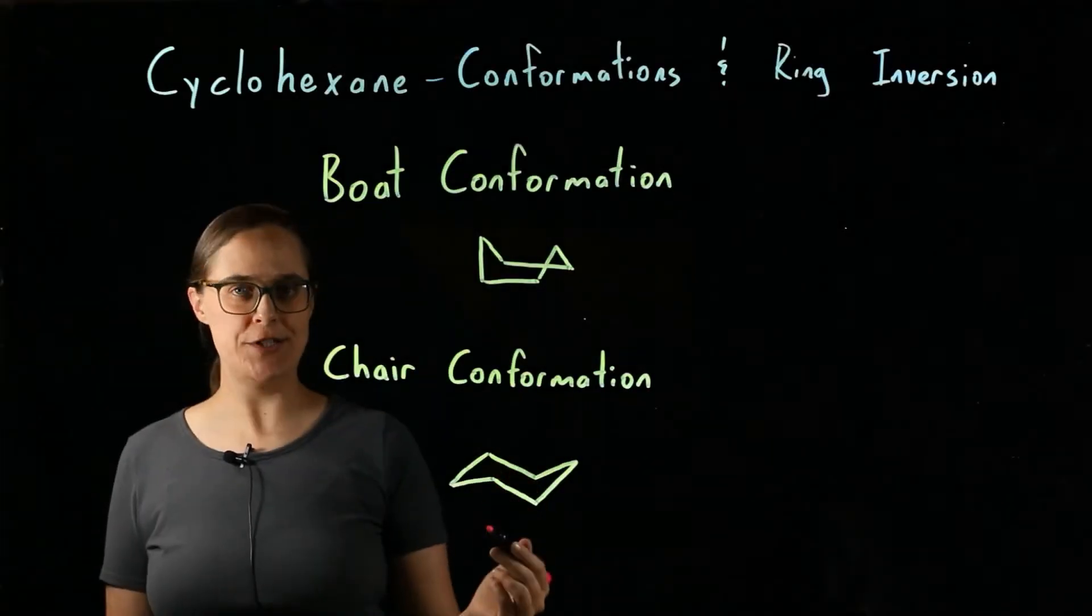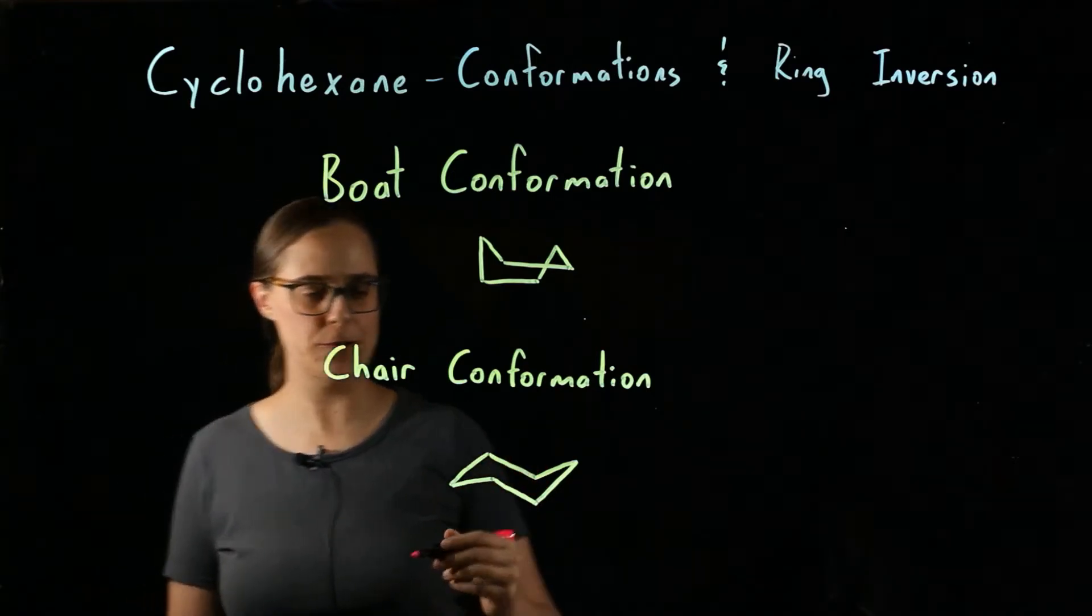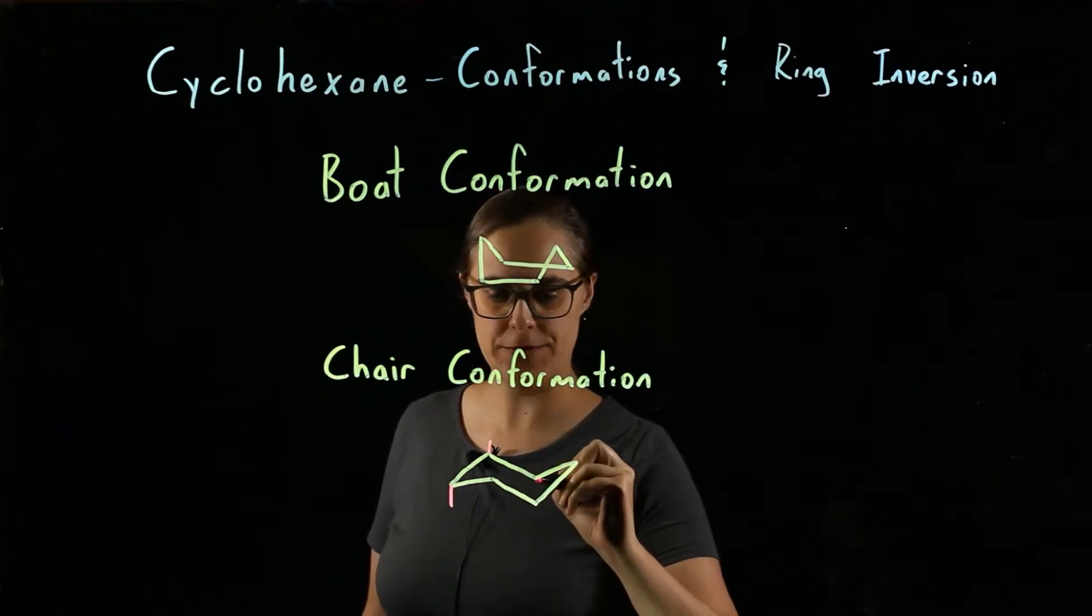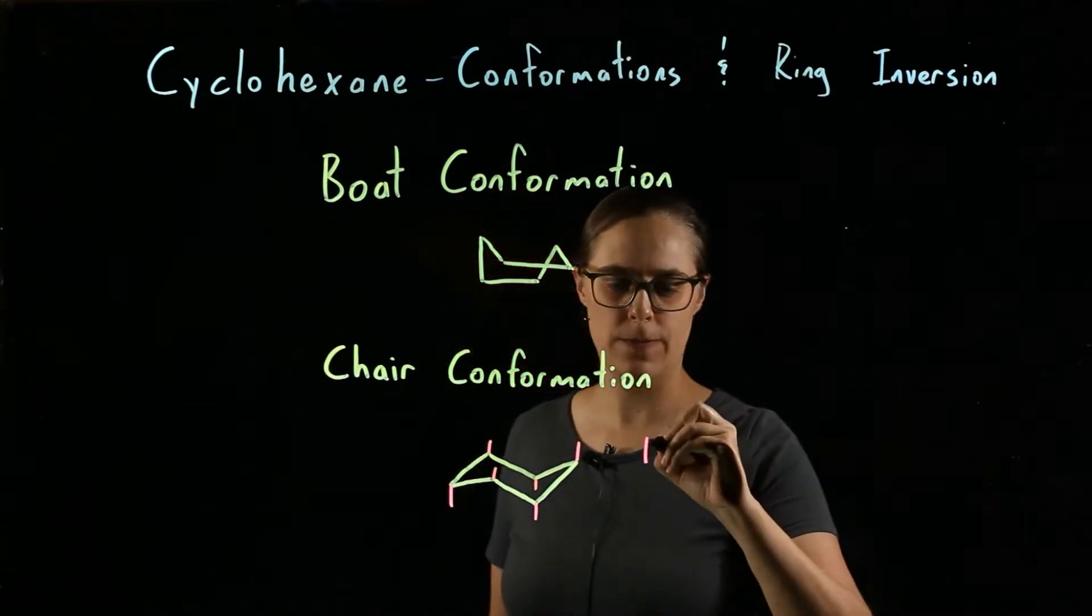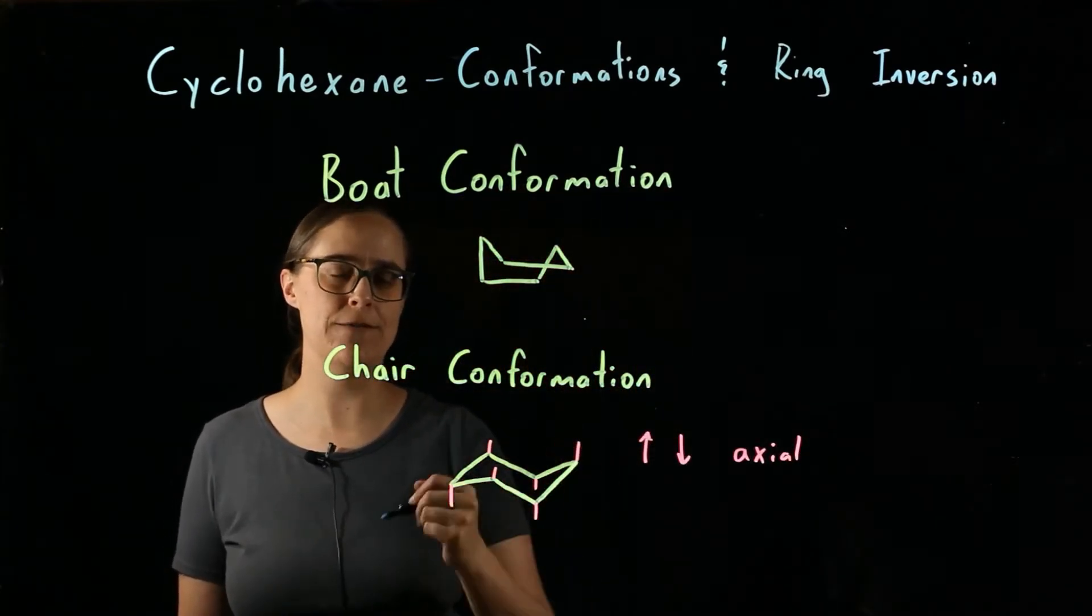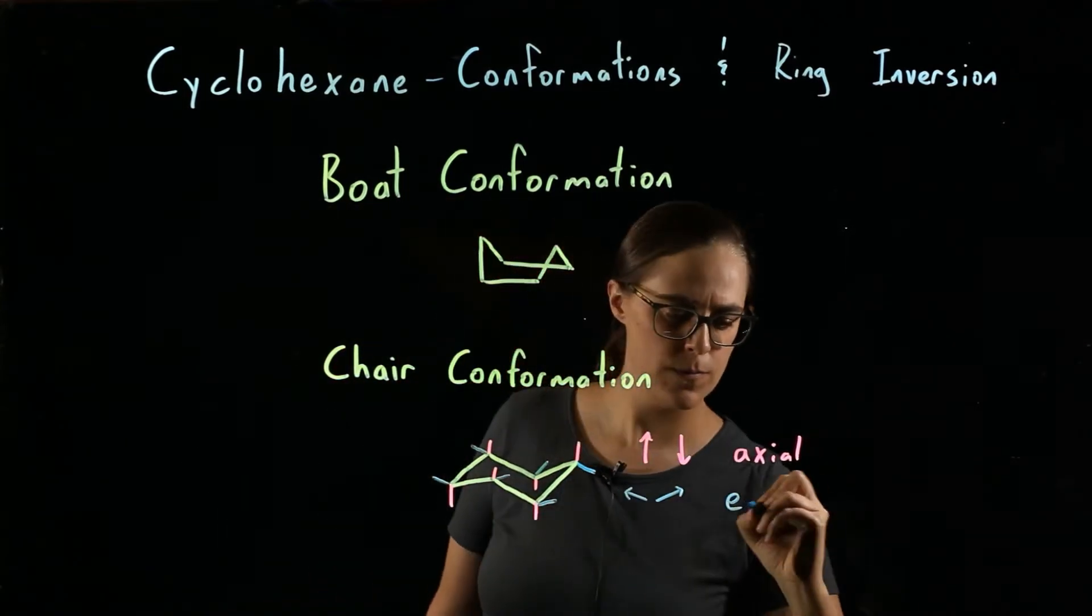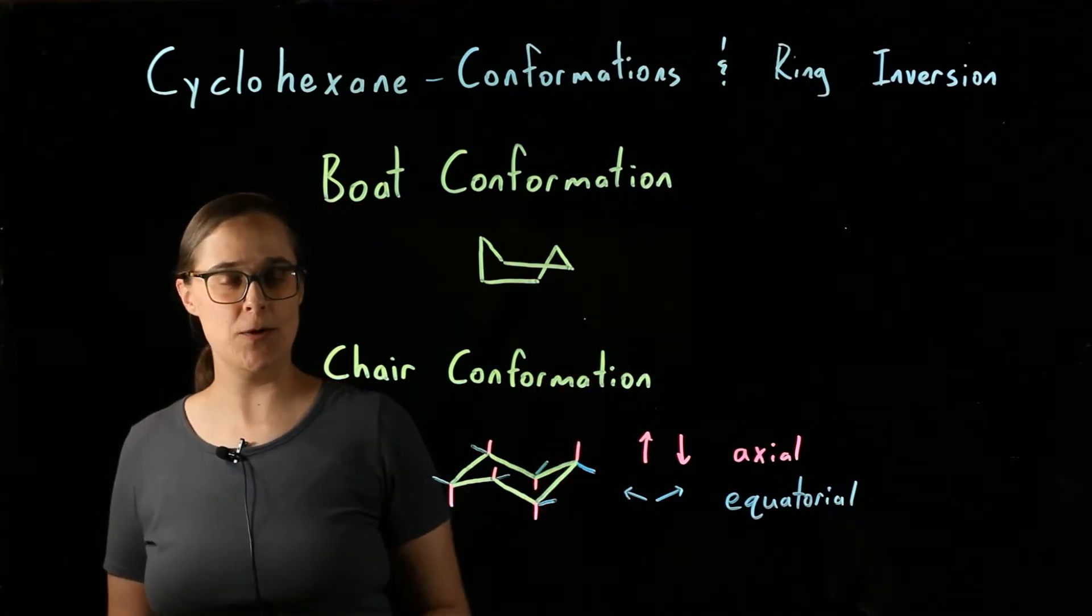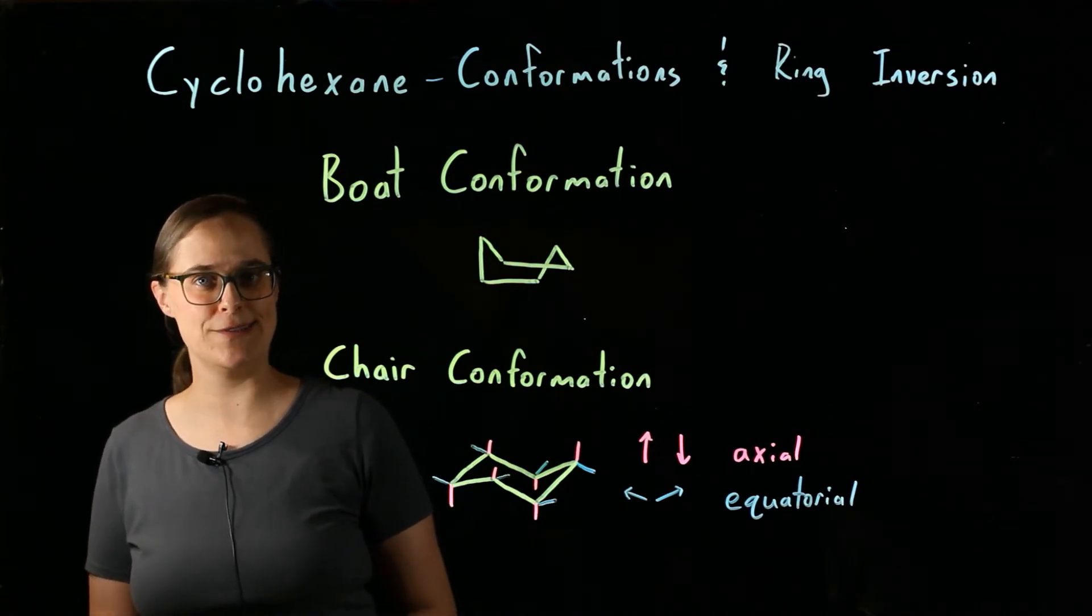So in chair conformation, we can have either axial or equatorial groups. Axial groups point either straight up or straight down, and they alternate between pointing up and down. Equatorial groups point from side to side. In a ring inversion, all of the axial and equatorial groups switch. The axial become equatorial, equatorial become axial.